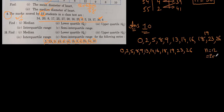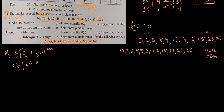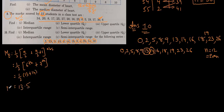Since n=12 is even, for the median the formula is (1/2) × [n/2th observation + (n/2 + 1)th observation], which gives us the 6th and 7th observations. Counting through the ordered data: the 6th observation is 13 and the 7th is 14. So median = (1/2)(13 + 14) = 13.5. Median is 13.5.